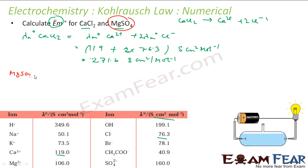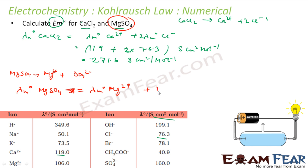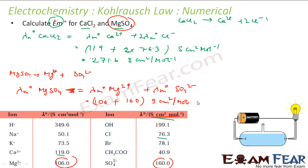Solving this: 152.6 plus 119 gives 271.6 Siemens cm² per mol. Now let's do the same for MgSO₄. MgSO₄ breaks into Mg²⁺ and SO₄²⁻ ions. So λM⁰ of MgSO₄ as per Kohlrausch's law is λM⁰ of Mg²⁺ plus λM⁰ of SO₄²⁻. The value of Mg²⁺ is 106 and SO₄²⁻ is 160 Siemens cm² per mol.